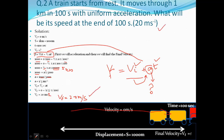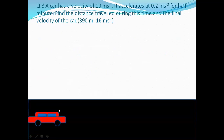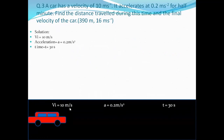Moving on to the next question: a car has a velocity of 10 m/s and accelerates at 0.2 m/s² for half a minute (30 seconds). Find the distance driven during this time and the final velocity. The expected answers are 390 meters displacement and 16 meters per second velocity.